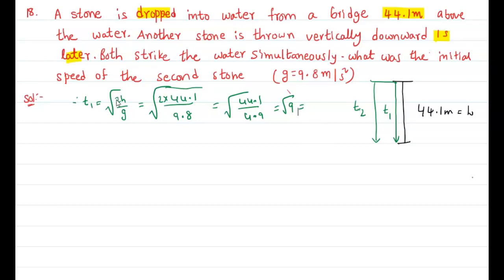So three seconds for the first stone to reach. The second stone was one second after, so t2 equals t1 minus one, which equals 3 seconds minus 1 second, equals 2 seconds.